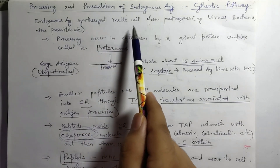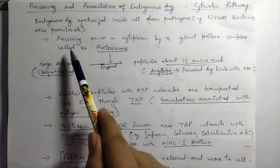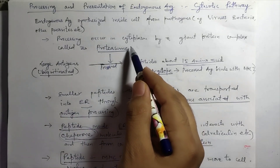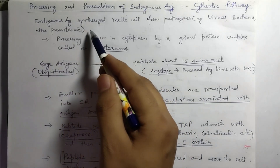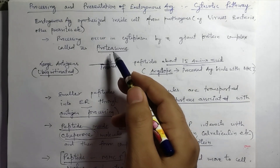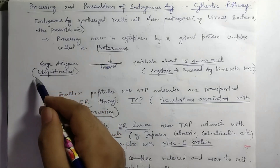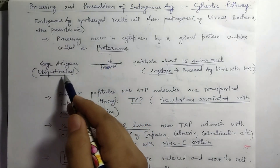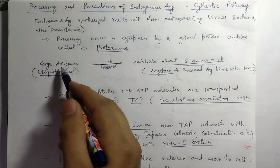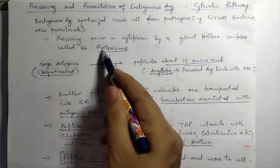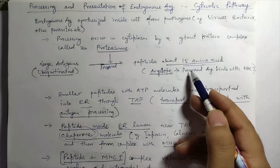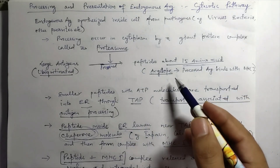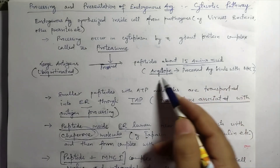Processing and presentation of endogenous antigens involves the cytosolic pathway. Endogenous antigens are synthesized inside the cell from pathogens including viruses, bacteria, or other parasites. Their processing occurs in the cytoplasm by a giant protein complex called the proteasome, which has a central channel or core with catalytic activity that cleaves large endogenous antigens into smaller peptides. The proteasome processes antigens that are ubiquitin-associated or linked proteins. The first step is ubiquitination at the lysine residue toward the N-terminal ends of large antigens, and then the catalytic activity of the proteasome cleaves these into smaller peptides averaging 10 to 20 amino acids, typically about 15 amino acids in length.